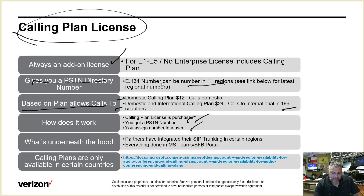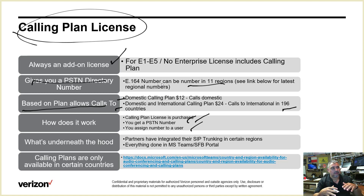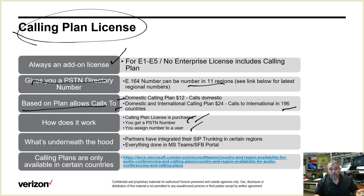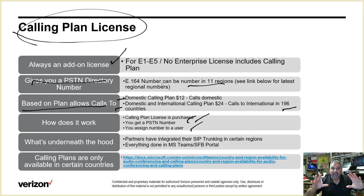What's underneath the hood is really interesting. Microsoft didn't become a telecom — they've partnered with telephony service providers, though they keep this very close to the vest. Those providers bring SIP trunks into Office 365 in the cloud and plug them into your tenants. When you say you want 100 Calling Plan licenses and go get 100 numbers, those numbers come from a service provider's pool in the background.